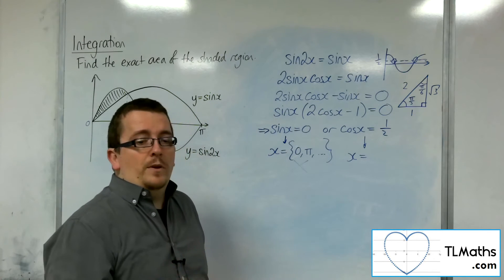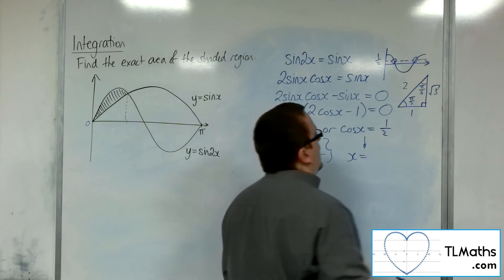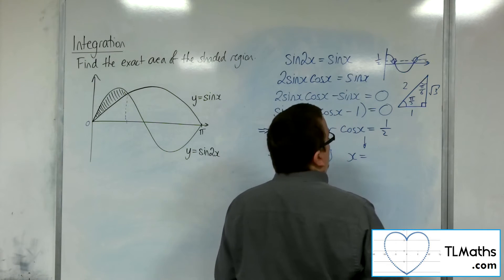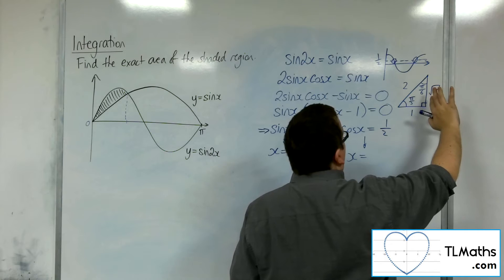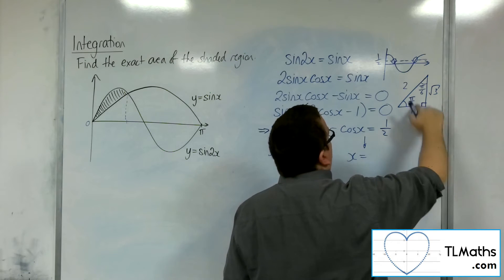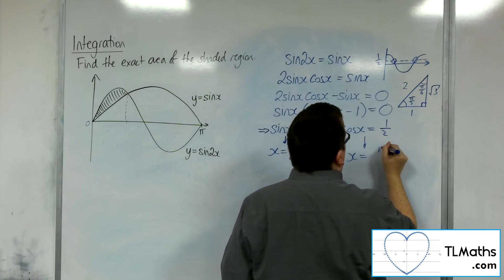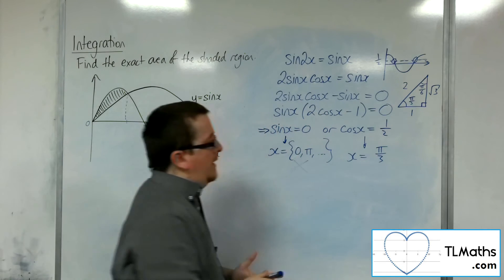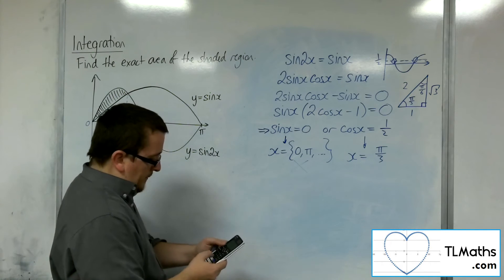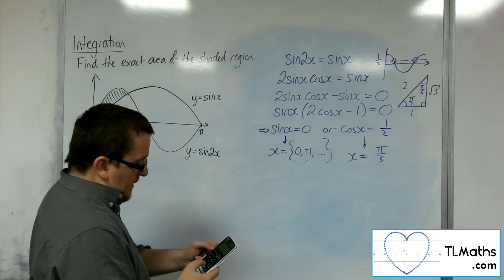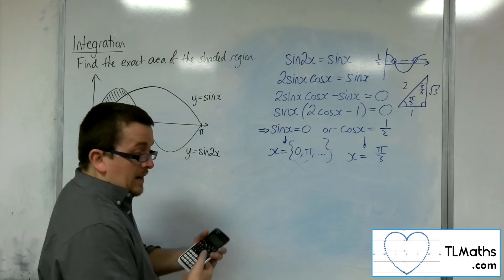So we're looking at wanting that to be the adjacent over the hypotenuse. So if that's the adjacent, then we must be looking at pi over 3. OK. So a quick check in your calculator in radians should agree with that.